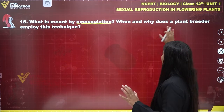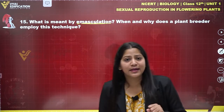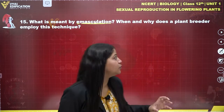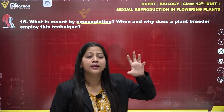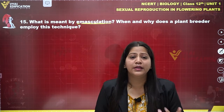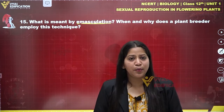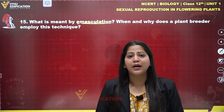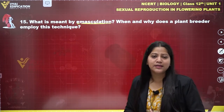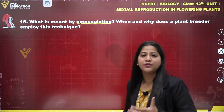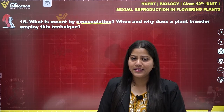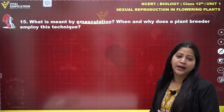When and why does a plant breeder employ this technique? They do this at the bud stage. Plant breeders emasculate the flower to prevent self-pollination. This is a very useful technique in artificial hybridization when the desired pollen is required, in order to obtain better quality seeds.